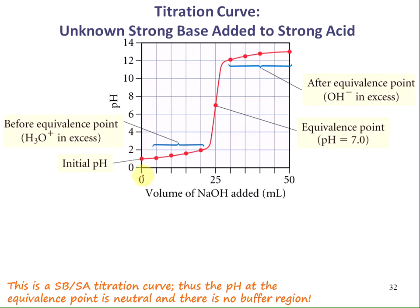Eventually, we add enough sodium hydroxide that there's an equal amount of sodium hydroxide and the strong acid. So at this point, we have equal amounts of the hydronium ion and equal amounts of the hydroxide ion. This is where we have the equivalence point. Because we're adding a strong acid and a strong base, they combine together to make a neutral salt, and the pH of the solution is that of pure water. This is why the pH is 7 at the equivalence point for a strong acid and a strong base.